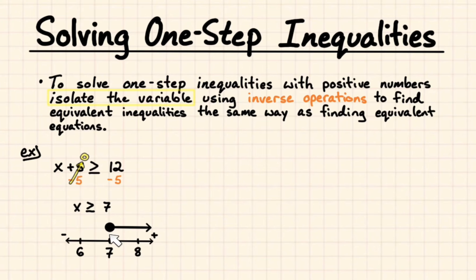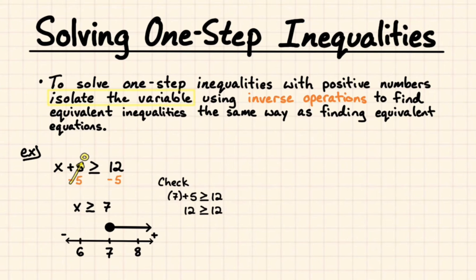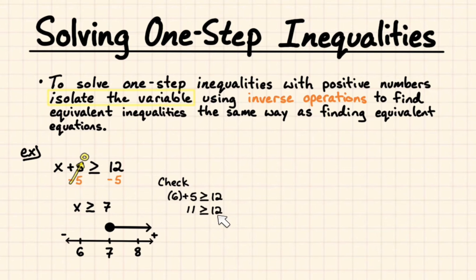Now we'll check to see if this is the same inequality as our original inequality. We write out x plus 5 is greater than or equal to 12 and check values around our boundary. First, 7: 7 plus 5 is 12, and 12 is greater than or equal to 12. Next, 8 should be true on our graph: 8 plus 5 is 13, and 13 is greater than or equal to 12. Then let's try a value that should be false on the other side of 7 — so 6: 6 plus 5 is 11, and 11 is not greater than or equal to 12, so that should be false. So I know that these two inequalities are the same.